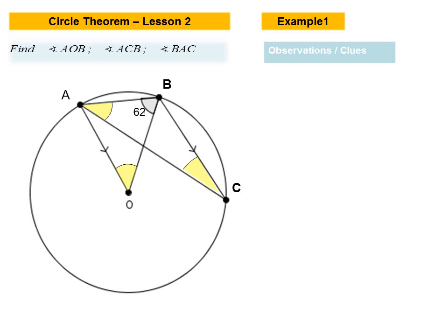You would see these types of problems on a CXC exam. Here we have a problem where we're asked to find the angles shown in yellow. As usual, we begin by looking at the diagram carefully and looking out for clues. Clues point us towards specific theorems to apply, so once we see a clue we should dovetail immediately to a particular theorem.